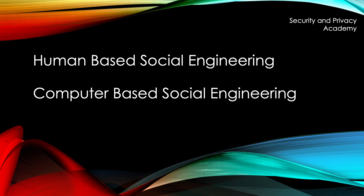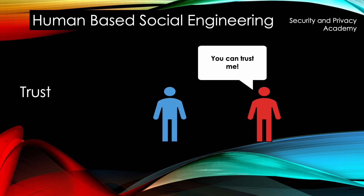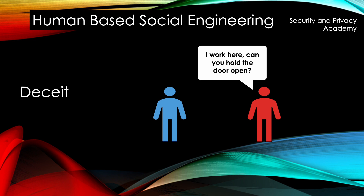We have three basic principles. The first one is trust — the attacker needs to build trust with the victim, and if the victim trusts the attacker, it's possible to socially engineer them. Deceit is another important weapon. You just pretend to work there and you build upon the fact that other people want to help you rather than ignore you.